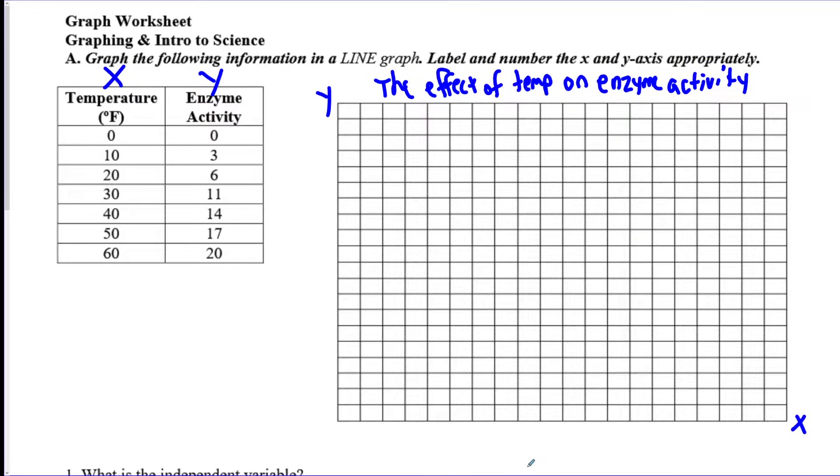Our x-axis label is always going to go on the bottom so we're going to write temperature and our unit is going to be degrees Fahrenheit, and then our y is going to go on the side, that's enzyme activity.